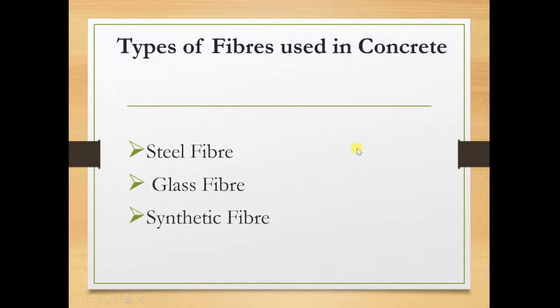Basically, in construction industries there are three types of fibers which are widely used. The first is steel fiber, then glass fiber, and then synthetic fibers.